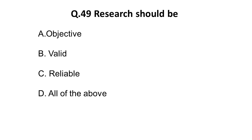Next question: research should be — option A is objective, option B is valid, option C is reliable. All three should be present in research. The correct answer is all of the above.